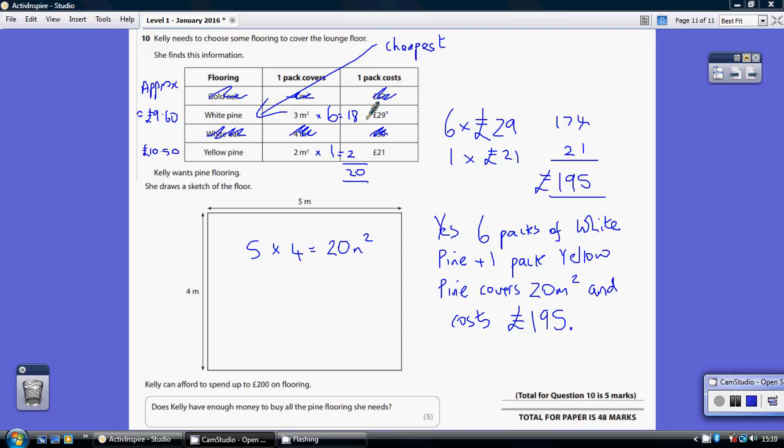Now you can't just look at these prices here because you get different quantities. The white pine, it's more money, but you do get, it does cover three metres squared. So there's more of it. Whereas this one looks cheaper, but it only covers two metres squared. So how much is each of these per metre squared?